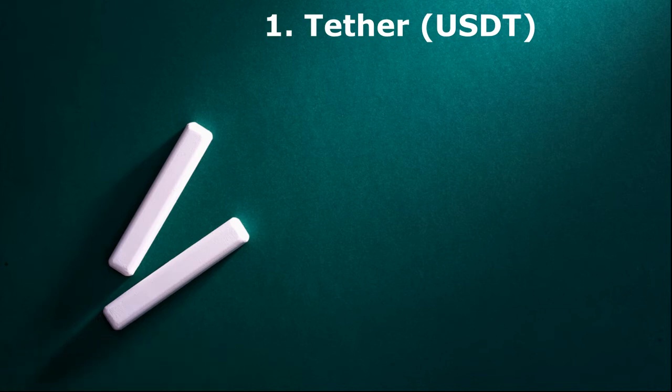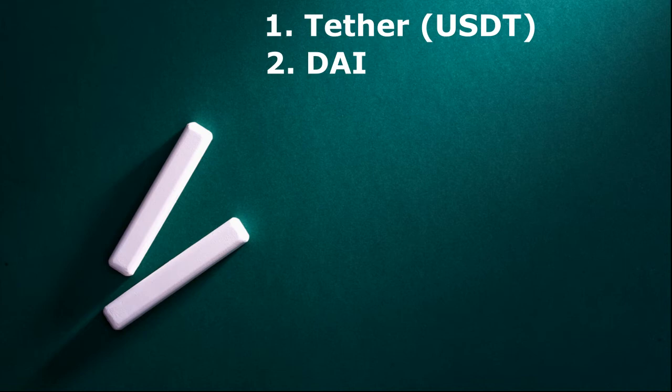The next one is DAI. DAI is offered by the MakerDAO, which is a decentralized autonomous organization. It is a completely decentralized stablecoin without any centralized issuing authority. So whenever you come across DAI, know that it is a stablecoin — not a coin that will grow with Bitcoin.